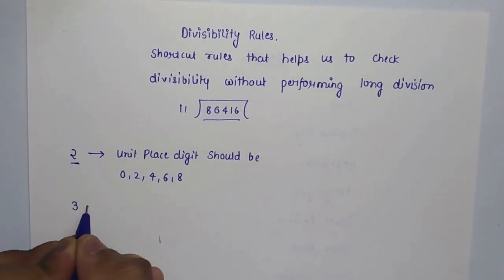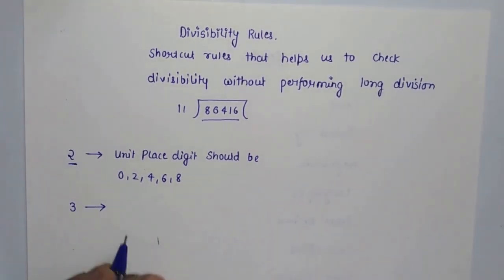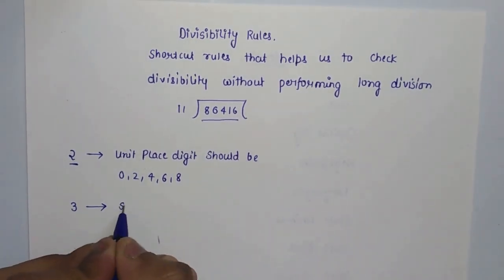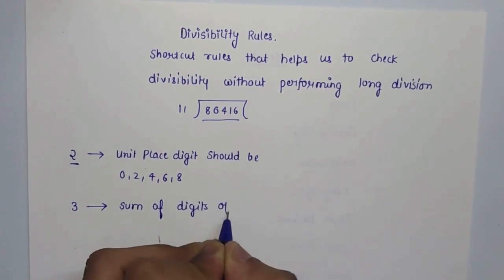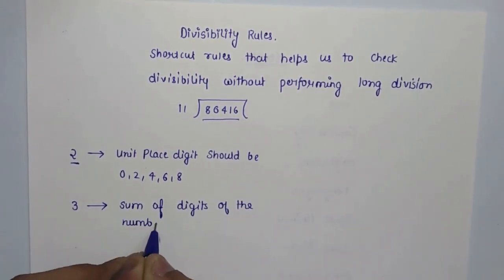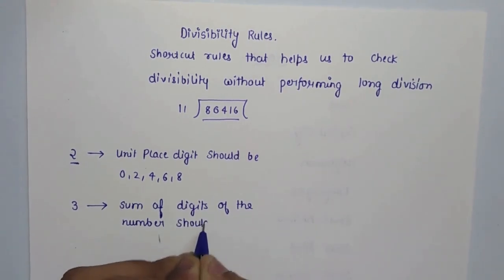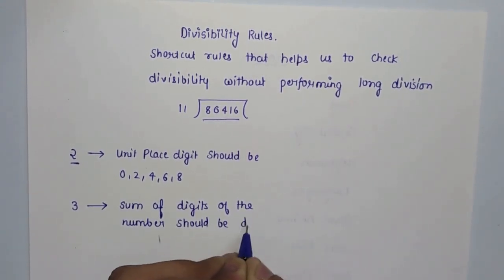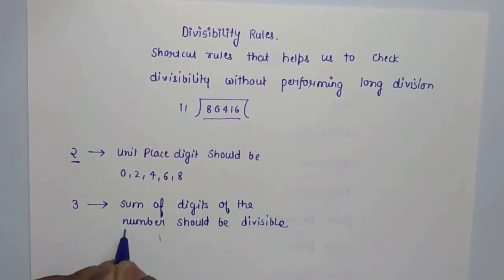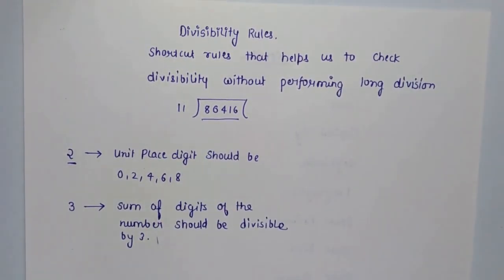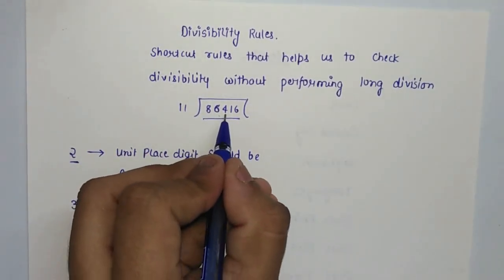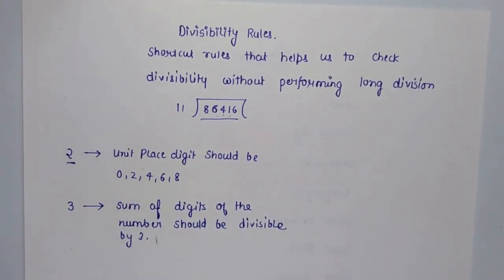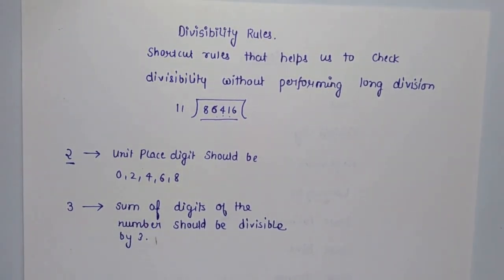For 3, the divisibility rule is that the sum of digits of the number should be divisible by 3. Taking 86,416 as an example: 8+6+4+1+6 = 25. Since 25 is not a multiple of 3, we can say this number is not divisible by 3.